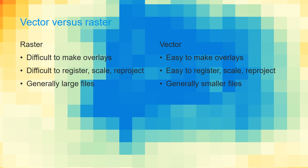Rasters are generally stored in large files because every pixel needs to be stored, while in vector we just store the geometry and the attributes. Rasters are also difficult to update — we need to regenerate a whole matrix — while with vector, we can simply move points, lines, polygons, or nodes, and update the map in a very fast and easy way.